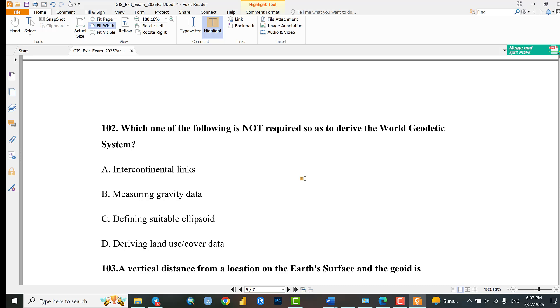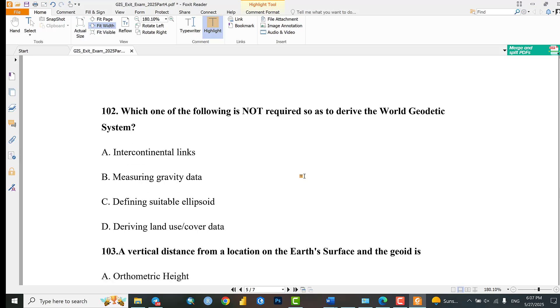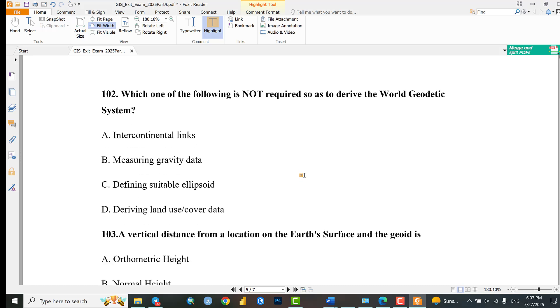Question 102: Which of the following is not required to derive the world geodetic system? Intercontinental links, measuring gravity data, defining sea level, or deriving land use land cover data. Deriving land use land cover data is not required to derive the world geodetic system.